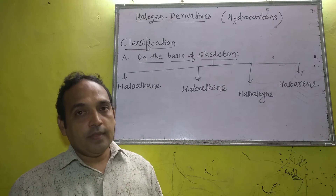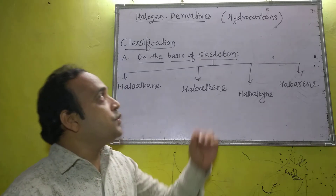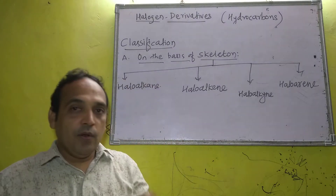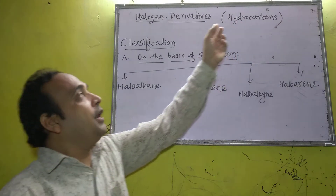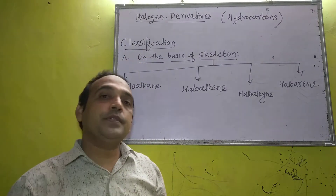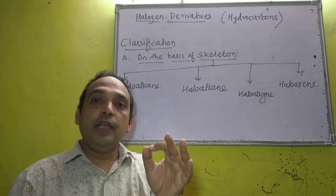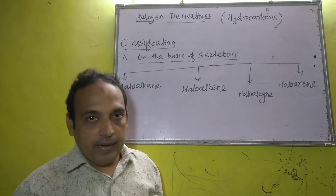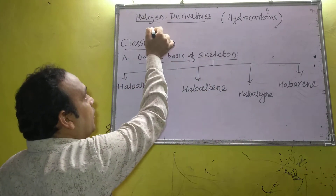Today we are going to start a very important concept of organic chemistry — halogen derivatives. The name of our topic is halogen derivative of hydrocarbon. Halogen belongs to group 17: Fluorine, Chlorine, Bromine, Iodine — all halogen family elements. They are called halides (Cl, Br, I) and represented by symbol X.